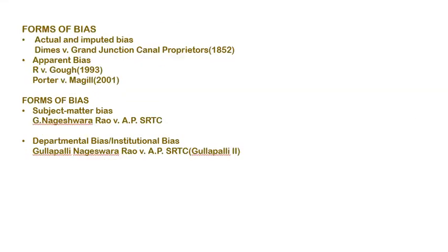Actual and imputed bias is established when the decision-maker is prejudiced in favour of or against a party. Imputed bias is a form in which the decision-maker is a party in the suit, or their pecuniary or proprietary interest is at stake in the outcome of the decision or proceedings. Once this fact is established, the decision-maker is automatically disqualified.